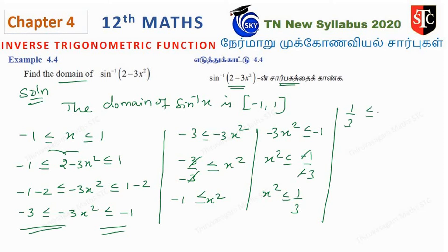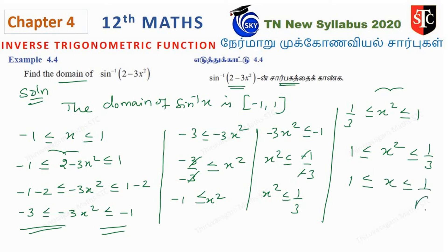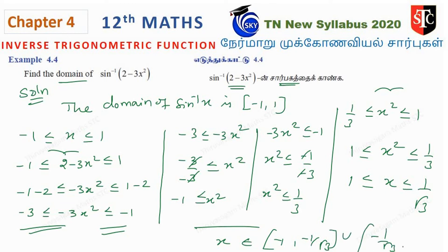Combining: 1 by 3 less than or equal to x squared less than or equal to 1. Taking square roots on both sides: 1 by root 3 less than or equal to x less than or equal to 1. So minus 1 by root 3 is equal to x, giving x belongs to minus 1 comma minus 1 by root 3 union 1 by root 3 comma 1.